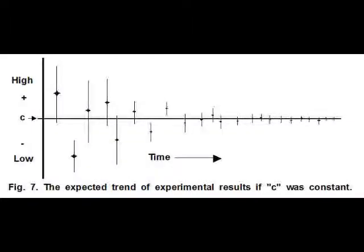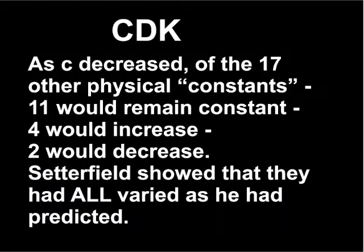There have been criticisms of the CDK model. The most frequent is that the instruments were inaccurate. But this should have produced a graph with measurements above and below the present speed, with accuracy getting better — but this is not the case. Another criticism is that if C changed, this would affect many other physical constants. But Setterfield has shown that of 17 other constants, 11 remained constant, 4 increased, and 2 decreased, and he showed that they all changed over time as he had predicted.